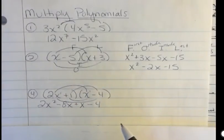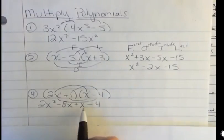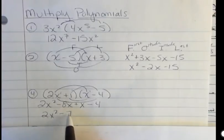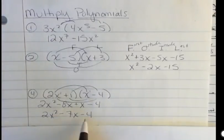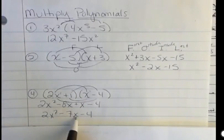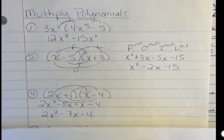Now I'm going to combine my inside and outside terms because they are like terms. So my final answer, 2x squared minus 7x minus 4. Notice this is now a second degree polynomial. I can't combine these because this is a second degree, this is a first degree, that's a zero degree. None of them have the same degree, so I can't go any further.